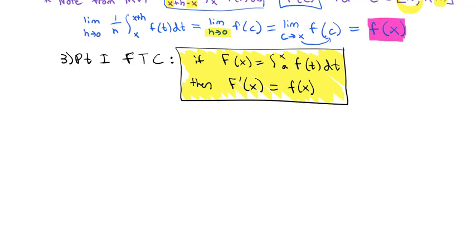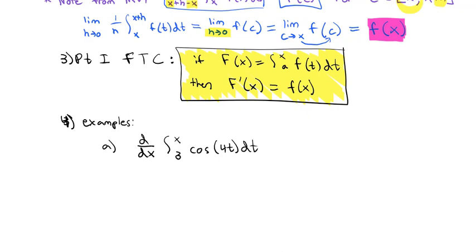Let's do some examples. Find the derivative of the integral from 3 to x of cosine(4t) dt. What part one of the Fundamental Theorem tells us is that, as long as the bottom value is a constant, the top value just gets plugged in for t. The derivative of the integral is just the inside stuff — cosine(4t) with t replaced by x — giving us cosine(4x). That's all we have to do.